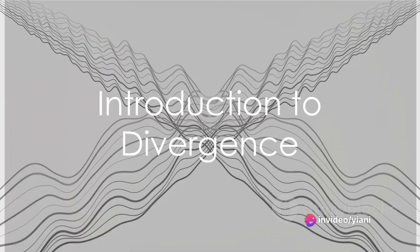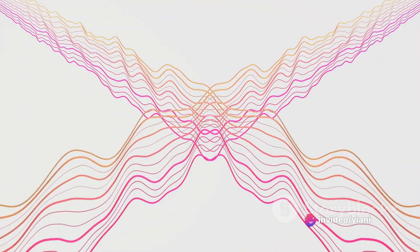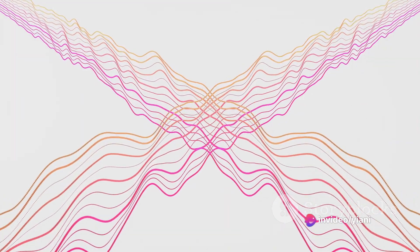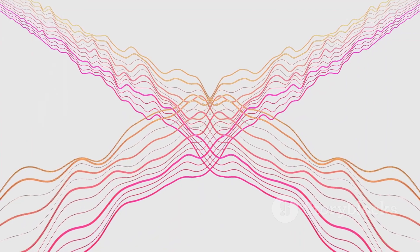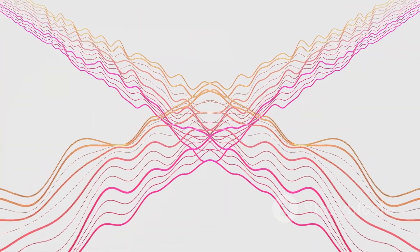Have you ever pondered the method we use to measure the net outward flux of a vector field? This fascinating concept is known as divergence. It's a vector operator that quantifies the net outward flux of a vector field from a specific point.